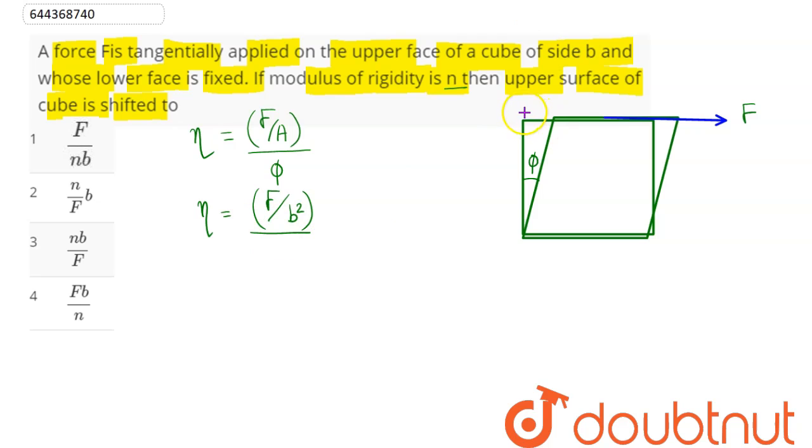The shift which is being asked is given here as this shift which is equal to X and this here is B. So phi is approximately tan phi, which is X by B.